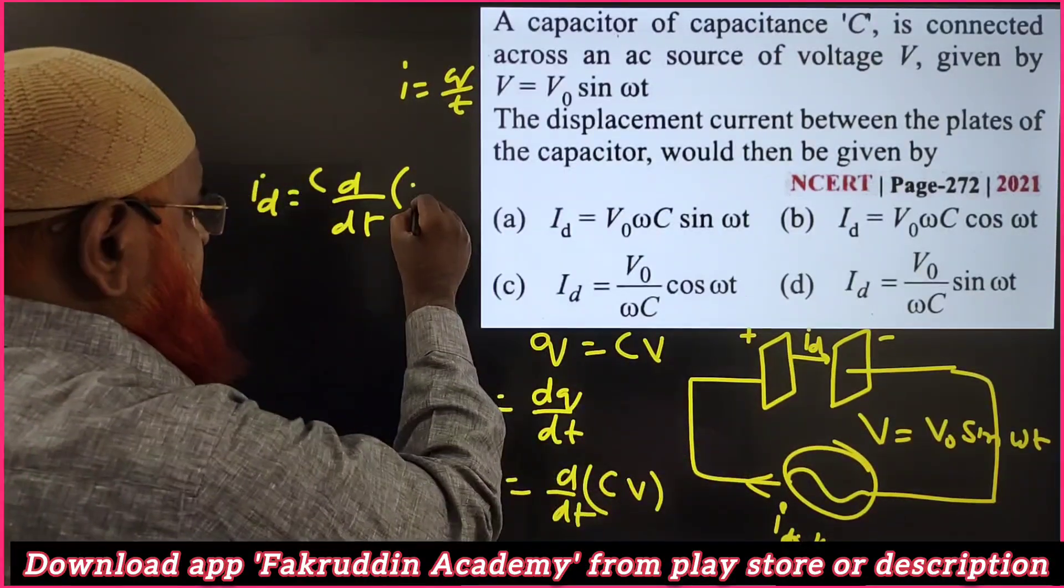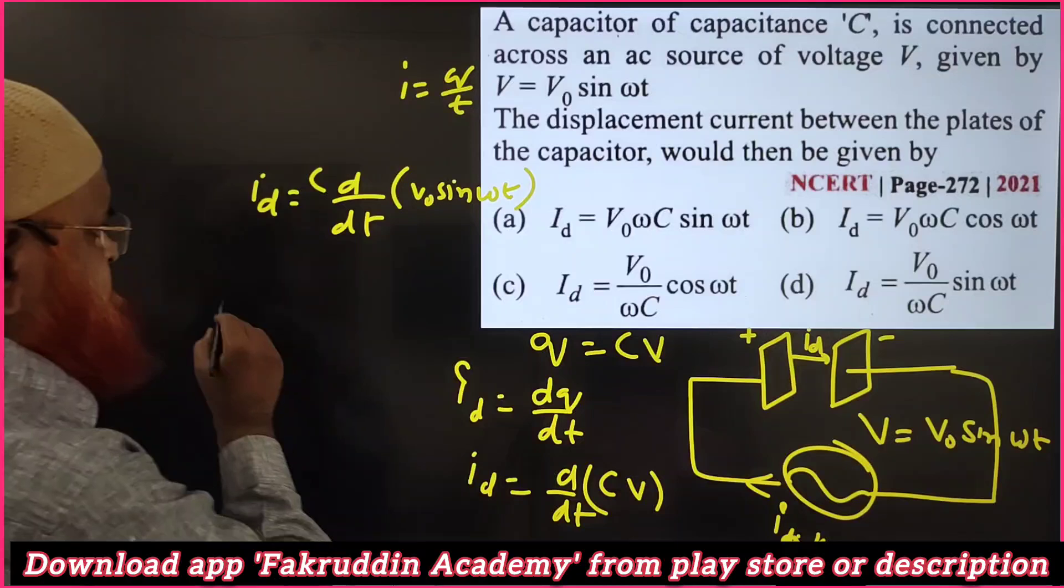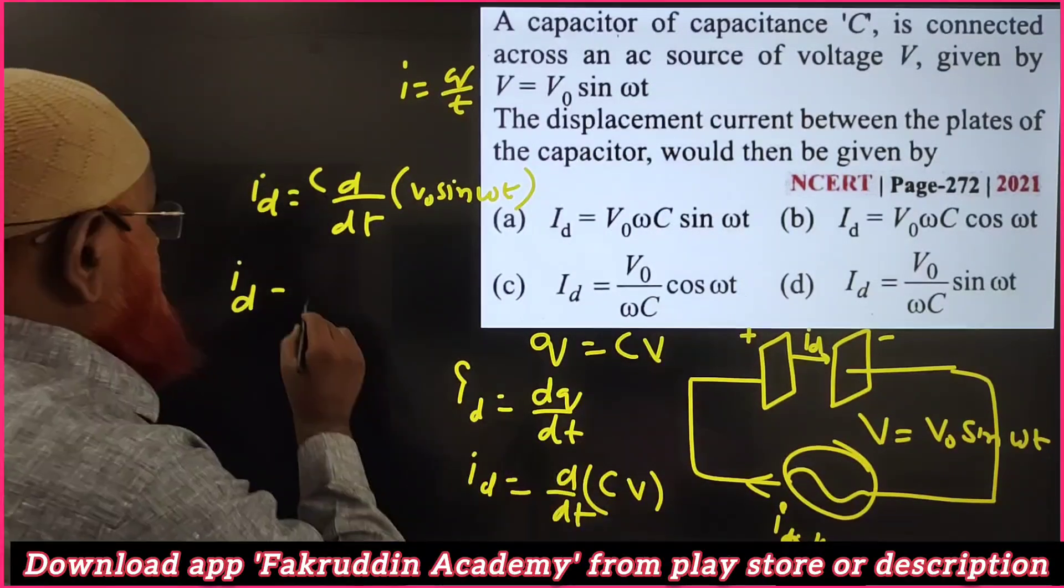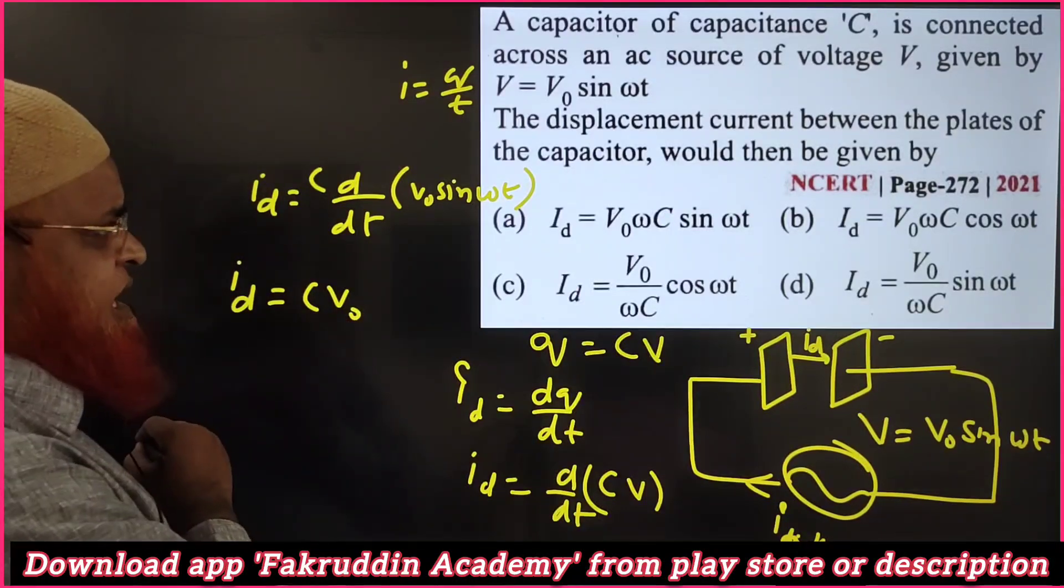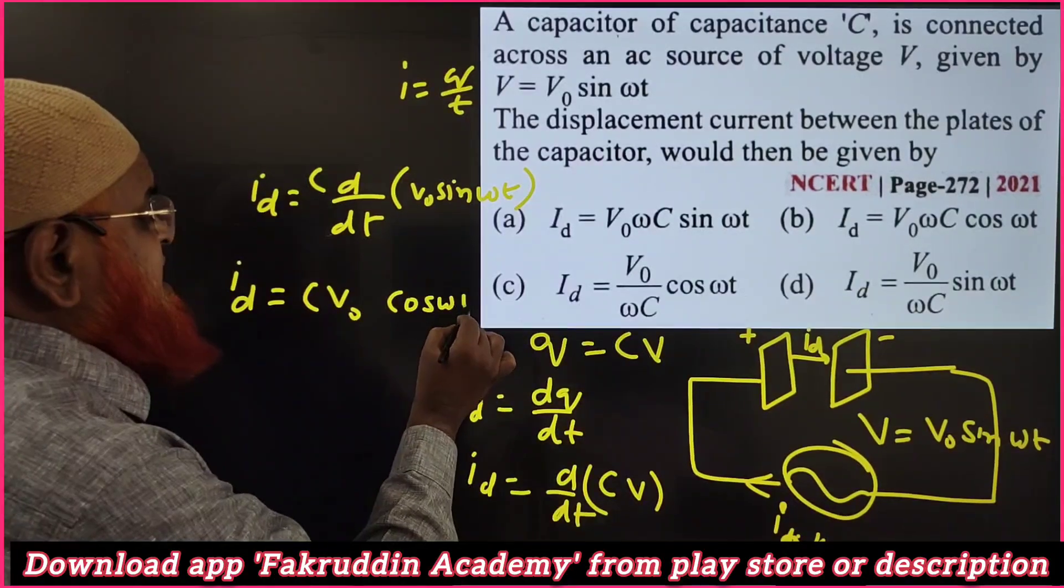C is constant, so C you write like that only. And V₀ you write like that only sin ωt. If you differentiate you will get cos ωt.